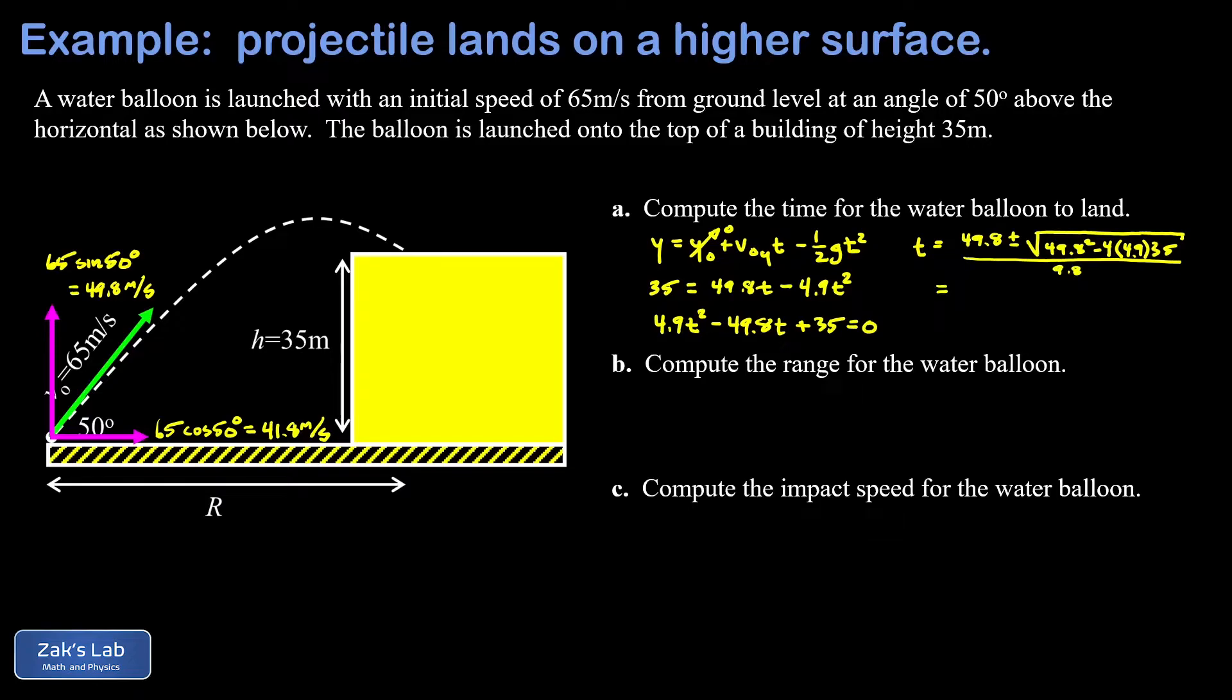So we'll go ahead and simplify the square root part of this, and that square root simplifies to 42.36. So we have t is 49.8 plus or minus 42.36, all divided by 9.8. We get two solutions for t, and I'll talk about why in just a minute. The smaller one is given by subbing in the minus sign, that gives me 0.759 seconds. Then we sub in the plus, to three significant digits that gives me 9.40 seconds.